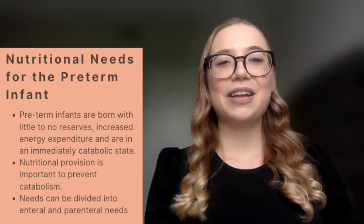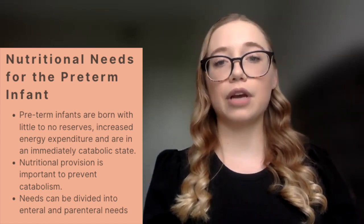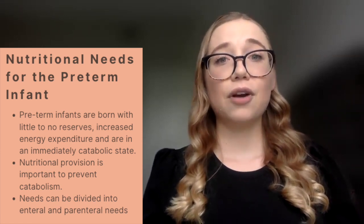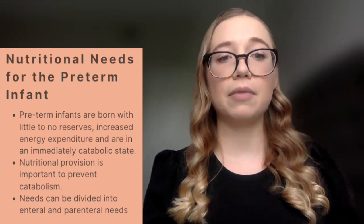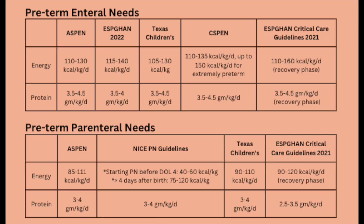We'll begin with neonatal nutritional needs for the preterm infant. Preterm infants are born with little to no reserves, have increased energy expenditure, and are immediately in a catabolic state. Nutritional provision is critical to prevent catabolism, and needs can be divided into enteral and parenteral recommendations. On screen are tables for both enteral and TPN needs published by various institutions: ASPEN recommendations from 2022, Texas Children's CSPEN, the ASPEN critical care guidelines from 2021, and the NICE-PN guidelines.